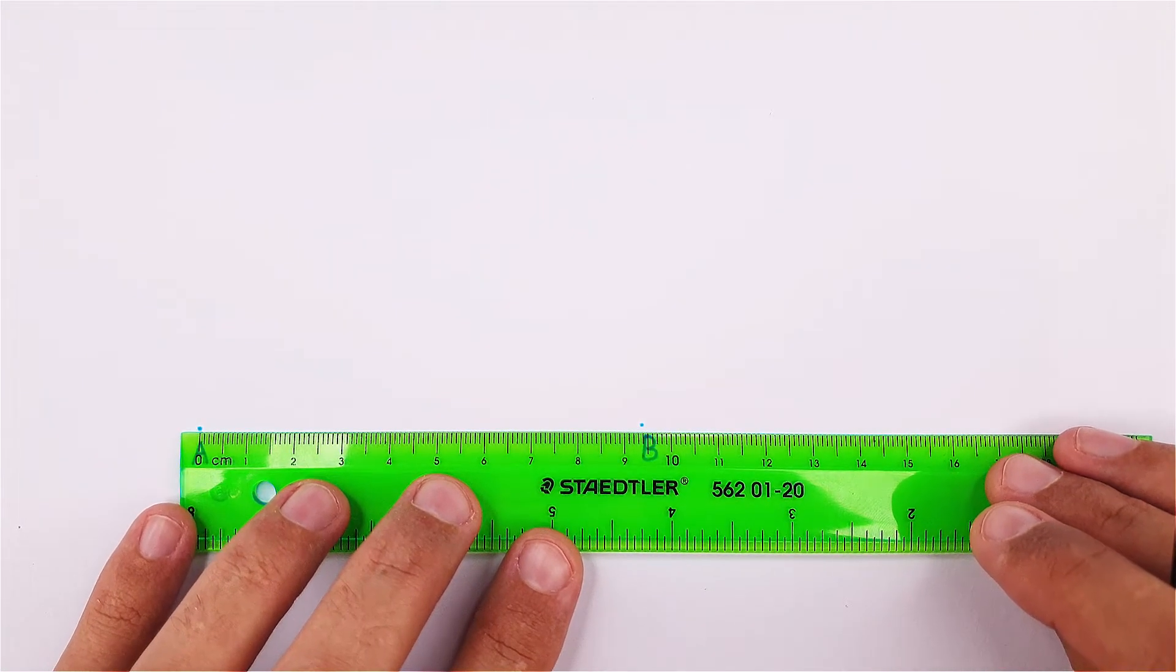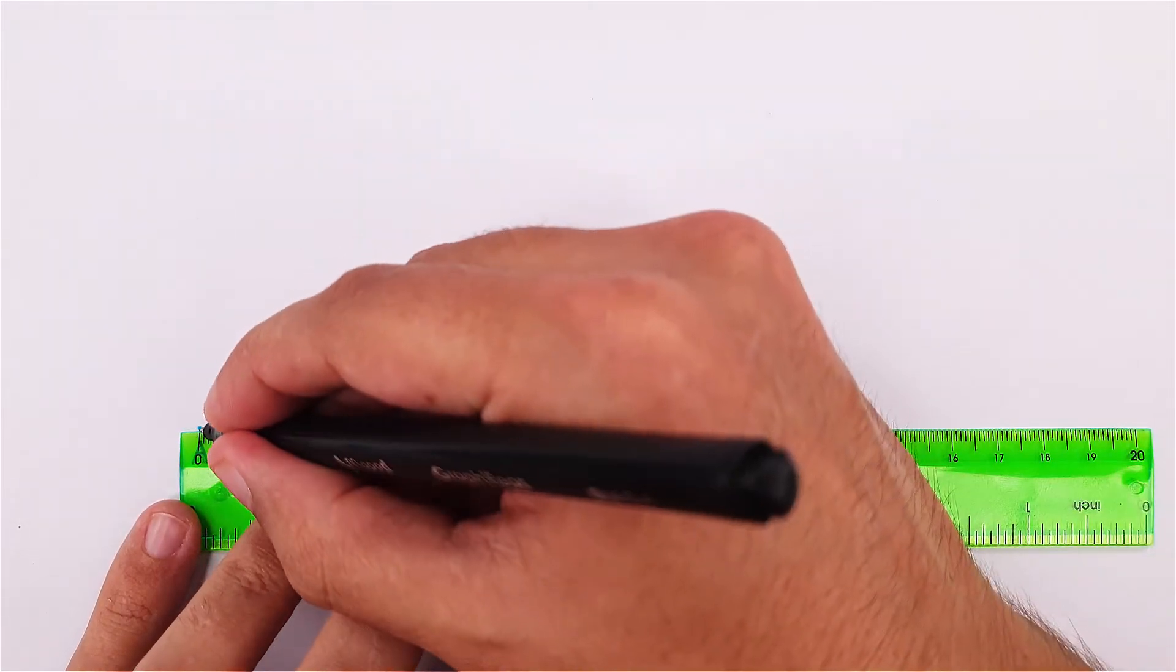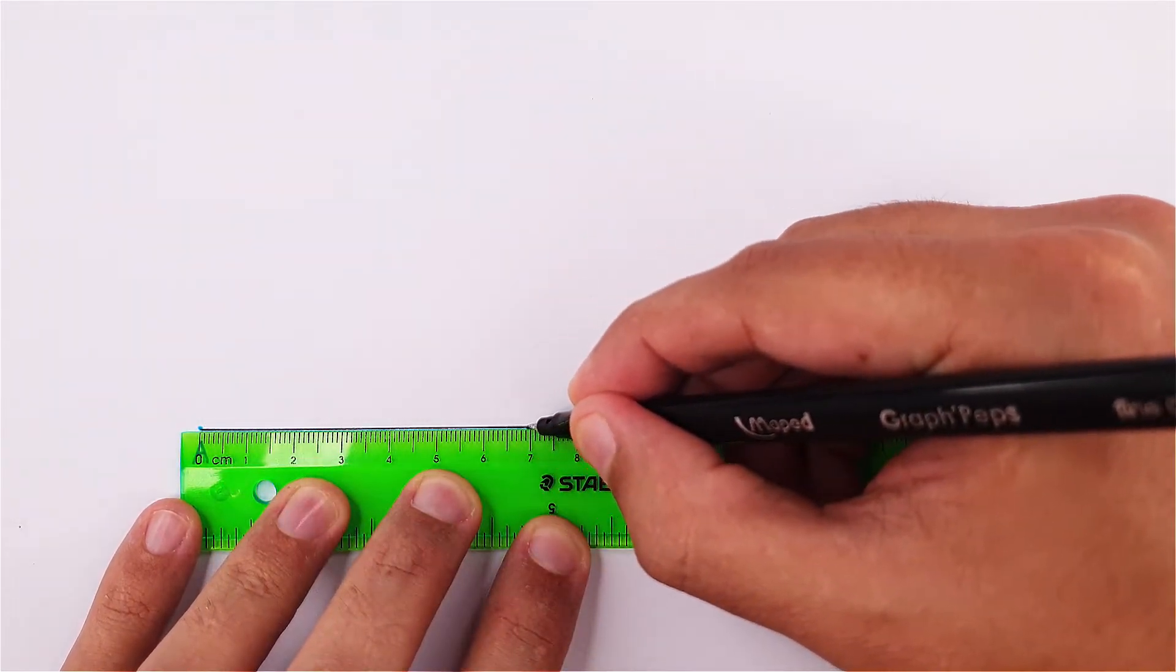In this video, I'll show you how to copy an angle using your compass. Let's start by drawing an angle on point A.